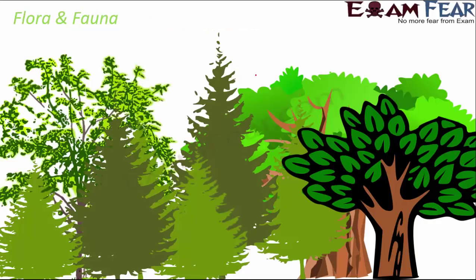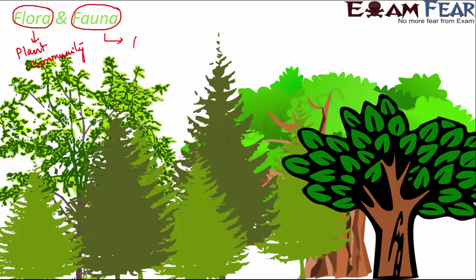When we talk about forests, we need to know two terms: flora and fauna. Flora refers to the plant community in a forest, whereas fauna refers to the animal community in a forest. To remember them: the word 'flora' resembles 'flower,' which is part of a plant, so flora is for the plant community.